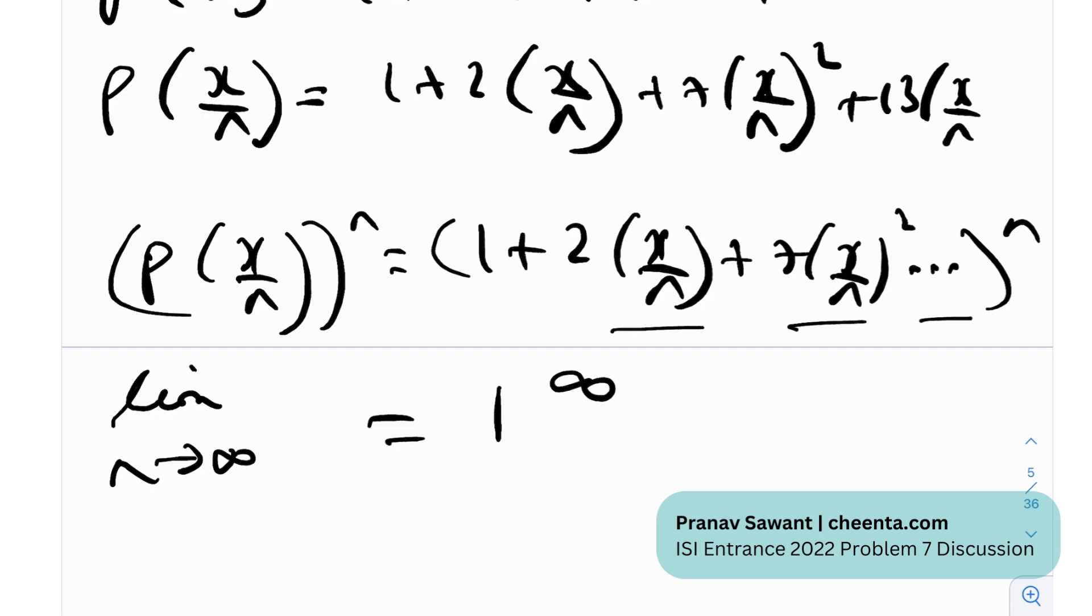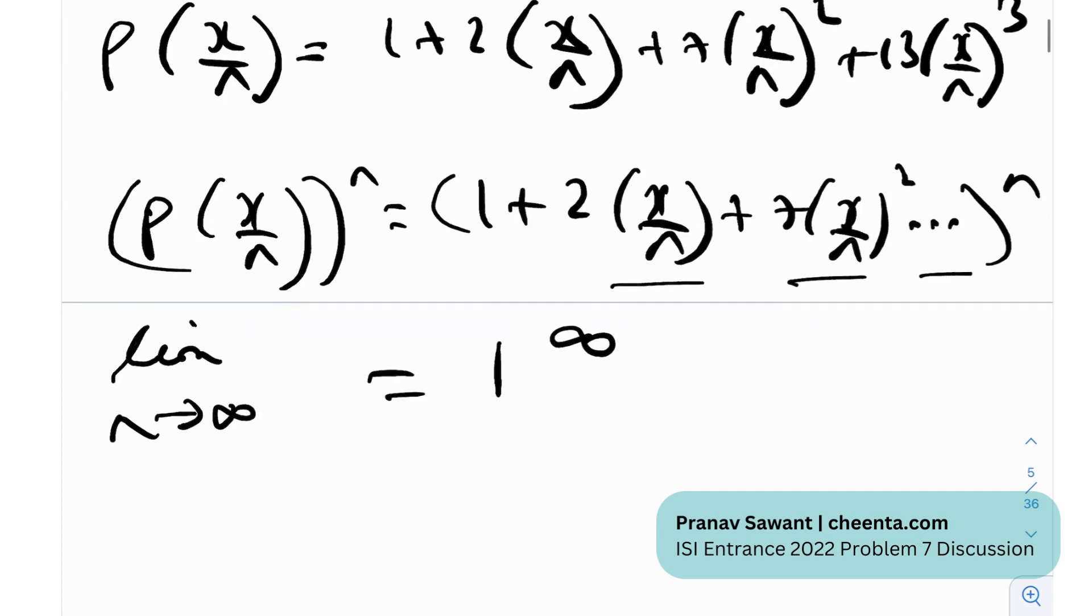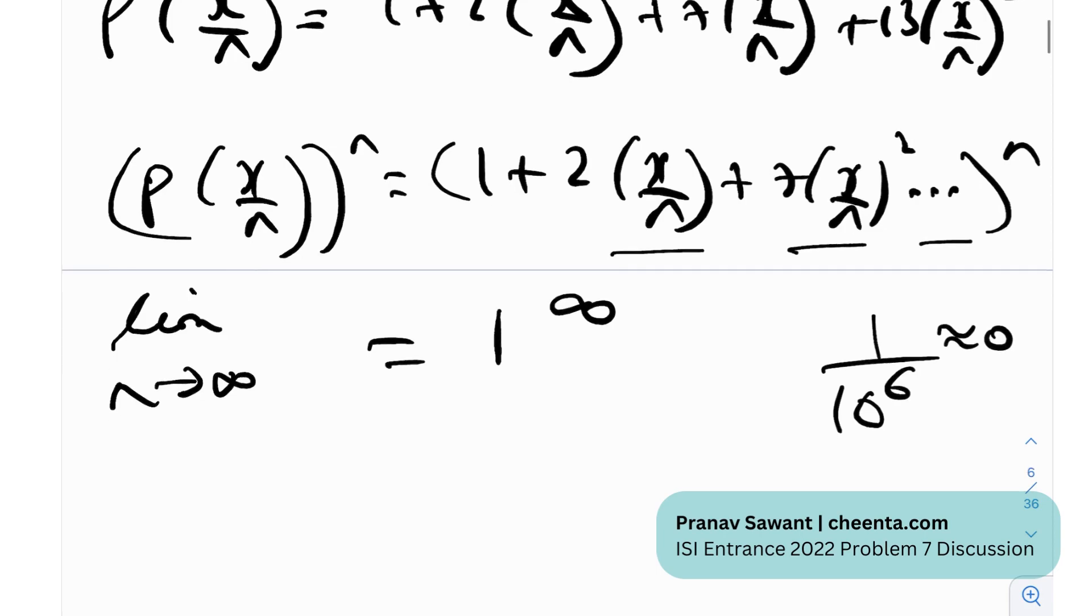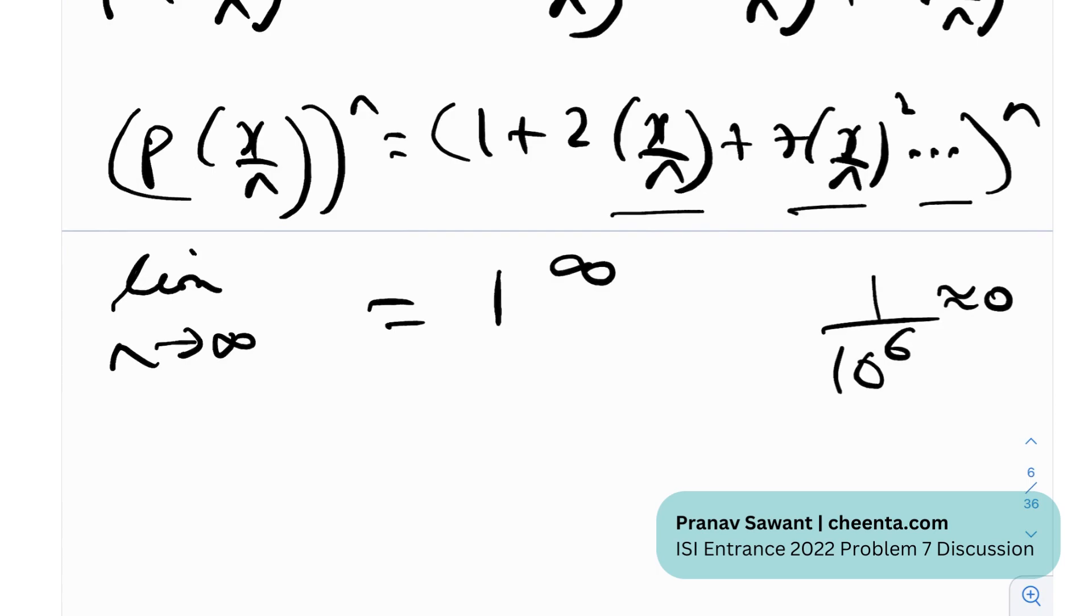Now why is that true? Because if you notice, n is on the denominators in these three terms. And when that is the case, what essentially happens is that as n tends to infinity, the denominator is really large. And whenever you have a really large quantity in the denominator, the entire fraction tends to 0. Essentially, all of these terms would tend to 0, and this would eventually converge to 1 raised to the power of infinity, that form of the limit.